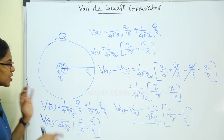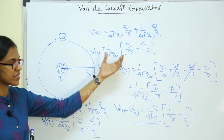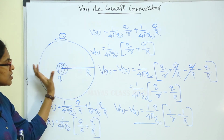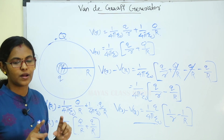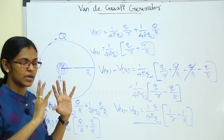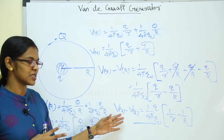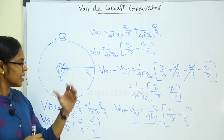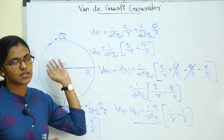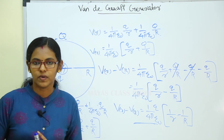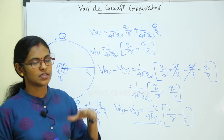Since small r is less than capital R, the quantity (1/r − 1/R) is positive, which means the potential of the small sphere is higher than the potential of the large sphere. That is why the charge is transferred from the smaller sphere to the larger sphere.